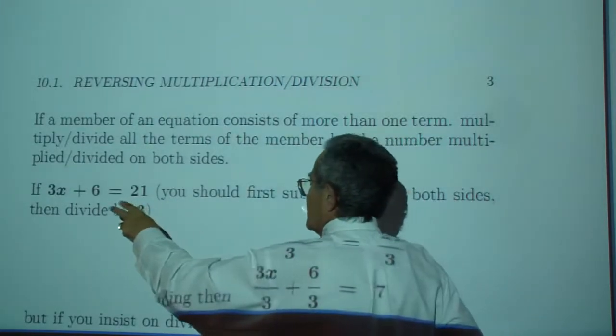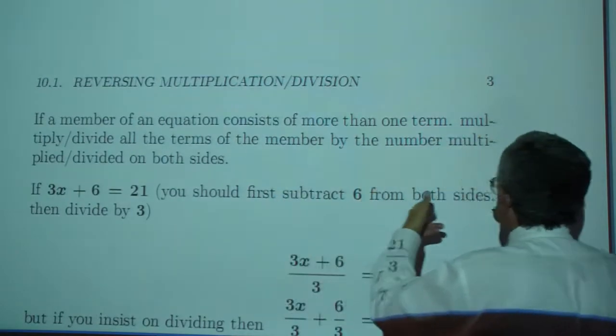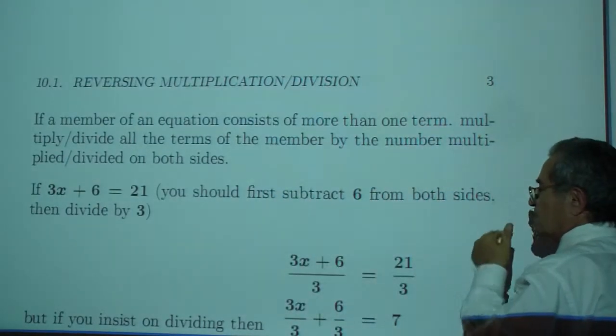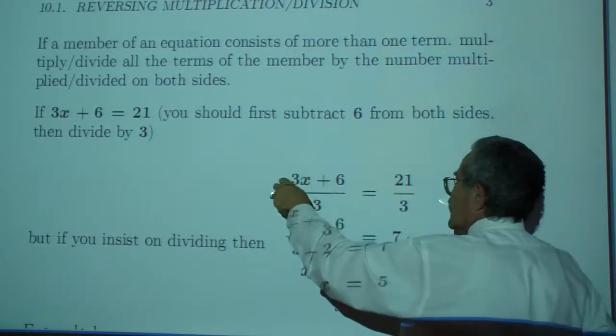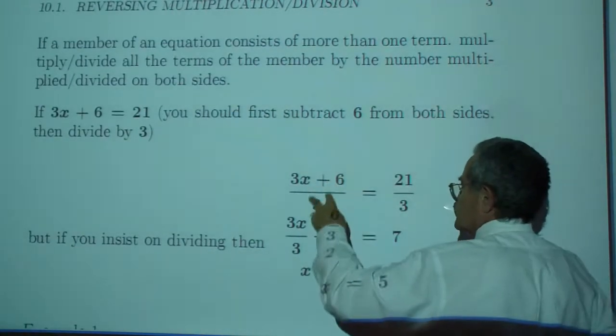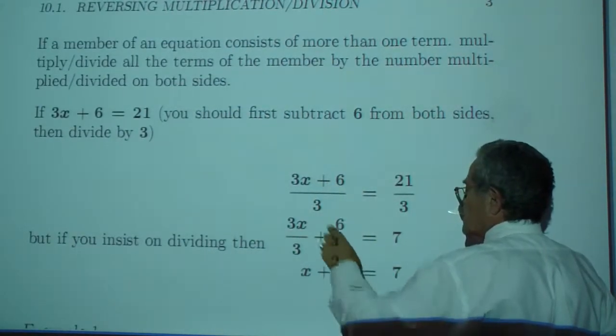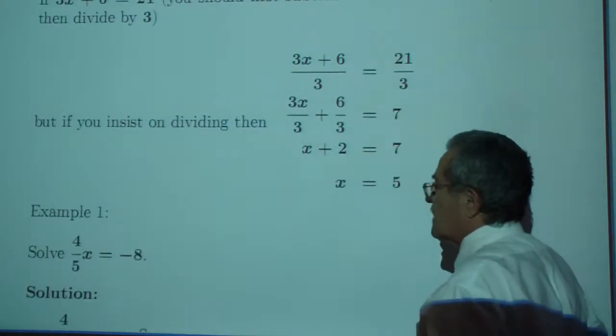If 3X plus 6 equals 21, you should first subtract 6 from both sides, then divide by 3. But if you insist on dividing first, then (3X plus 6) over 3 equals 21 over 3. Now this becomes two fractions: 3X over 3 plus 6 over 3 equals 7, or X plus 2 equals 7, or X equals 5.